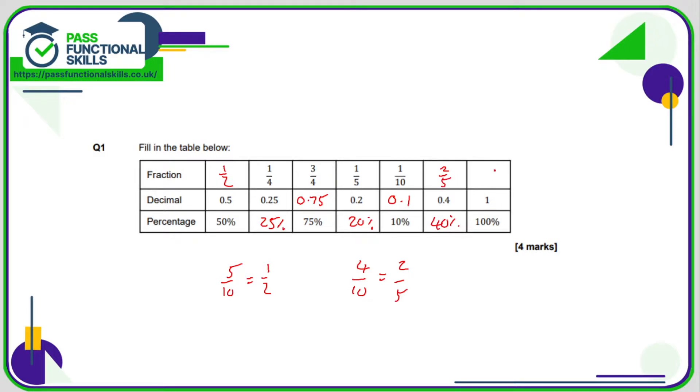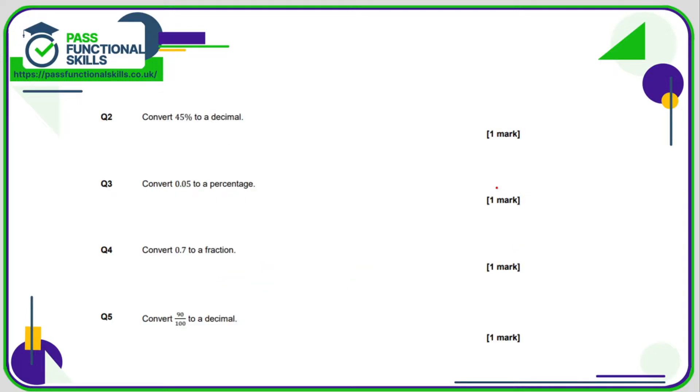This is a bit of an unusual question. You would rarely write the number one as a fraction, but one as a fraction is one whole, so one over one. Moving on to question two, we are converting a percentage to a decimal.